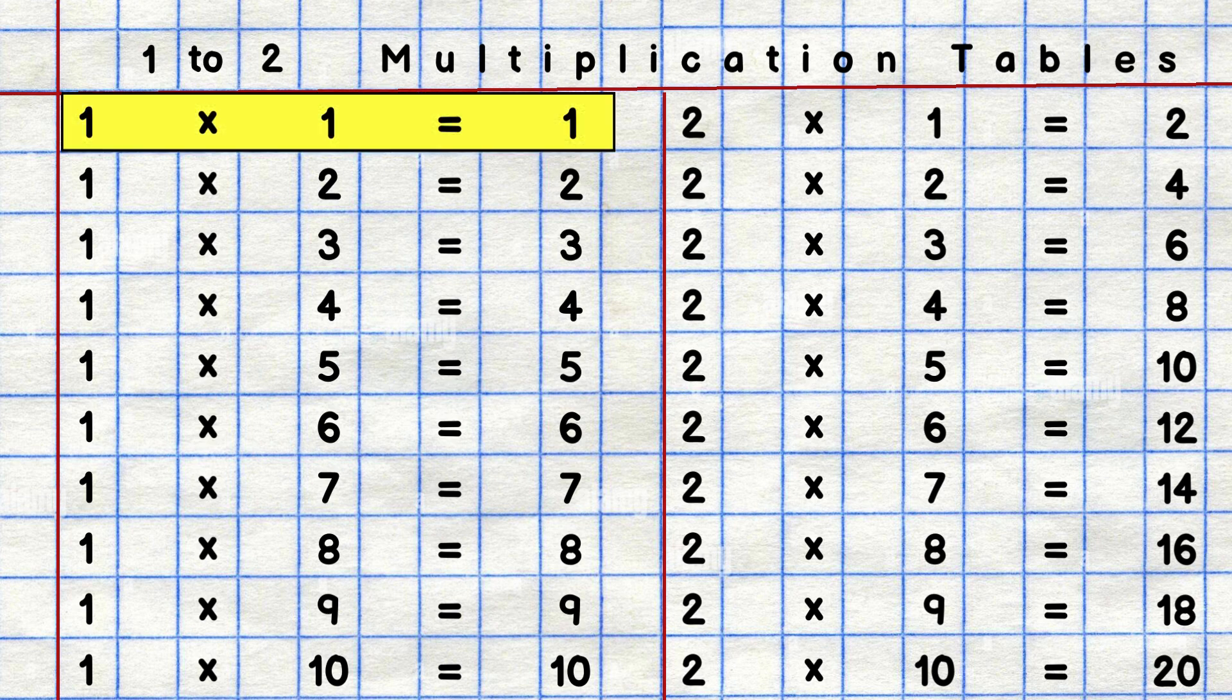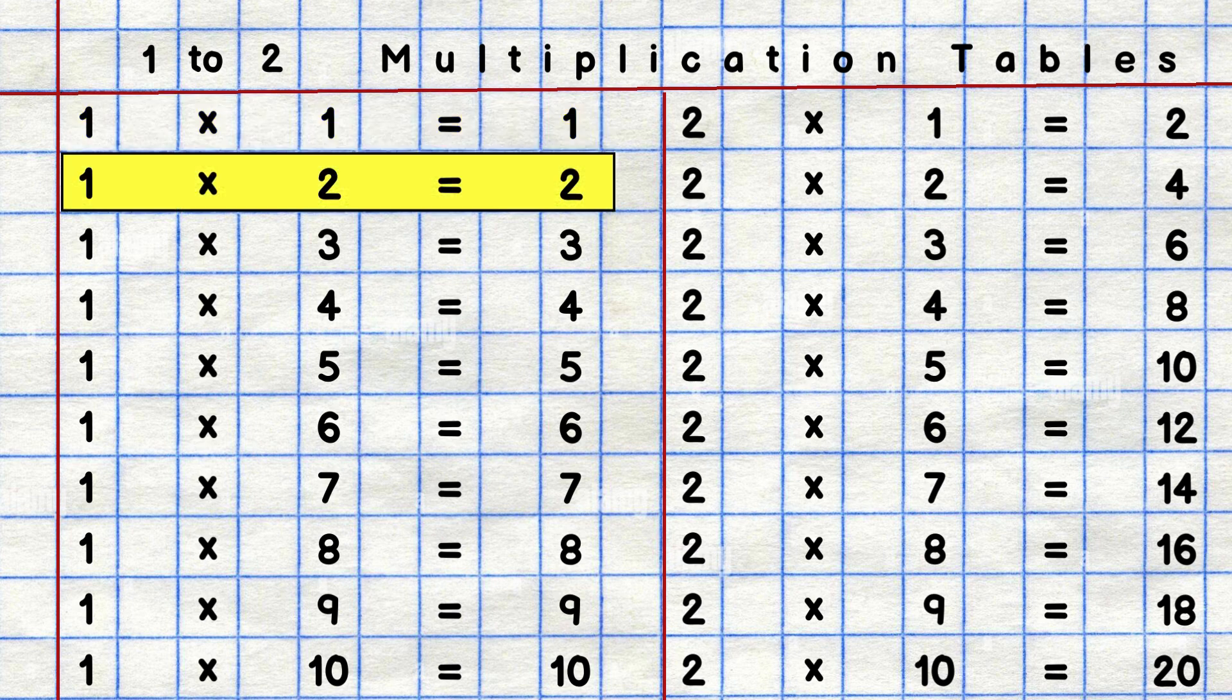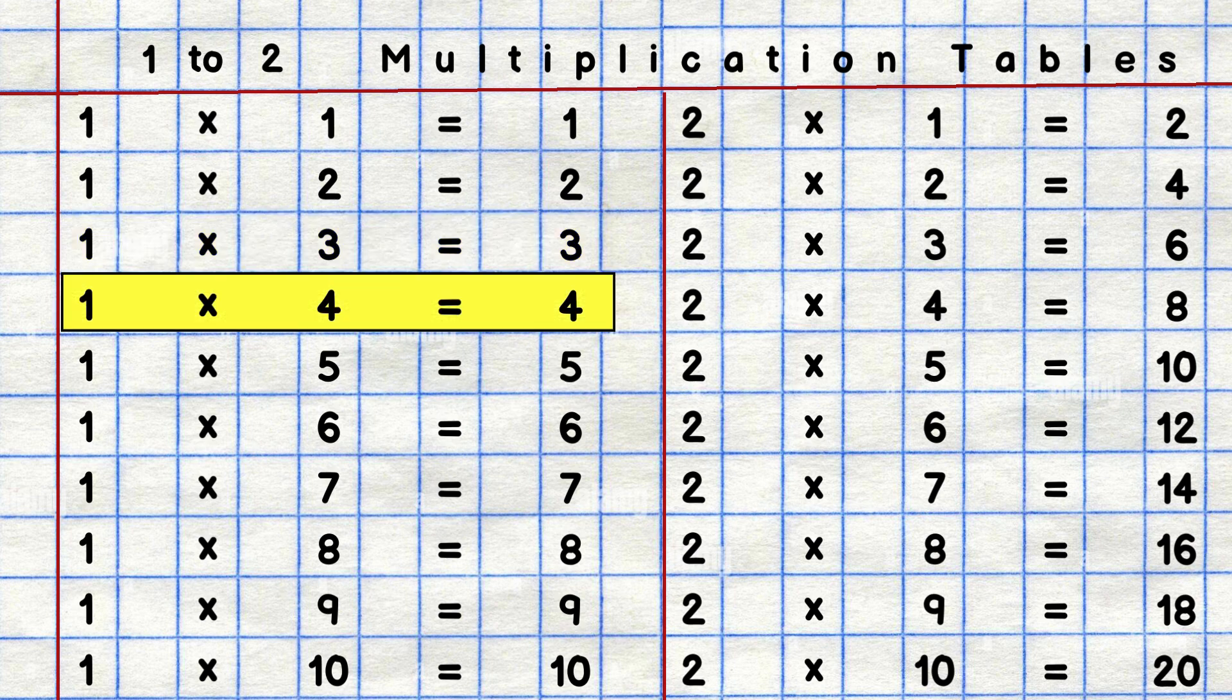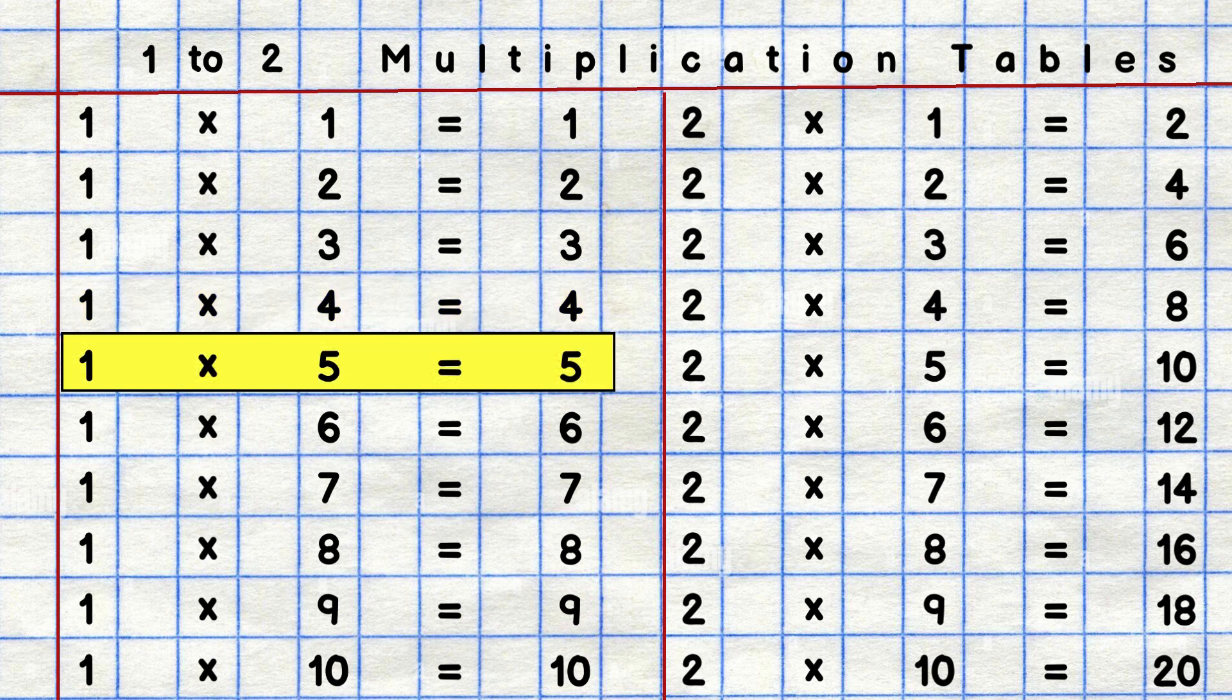1 1s are 1, 1 2s are 2, 1 3s are 3, 1 4s are 4, one fives are five.